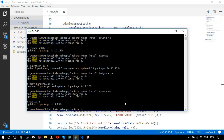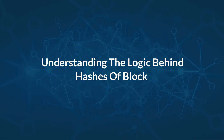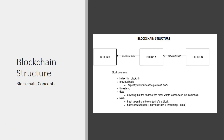Now we will start developing a block and the hash of a block, and we will do that in our JavaScript file — main.js — where we will create the complete blockchain. This involves developing a complete longest chain with hash values connected to the previous block and so on. Before starting with the code, it is important to understand the blockchain structure. In the last chapter I gave a brief description with a diagram of how a block actually looks with its parameters.